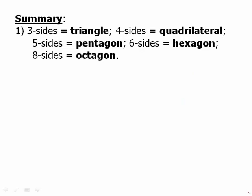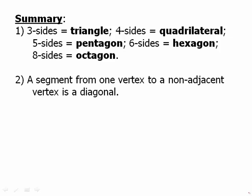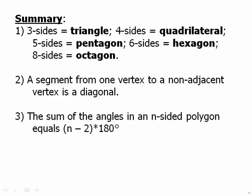In summary, a three-sided polygon is called a triangle. A four-sided polygon is called a quadrilateral. Five-sided polygon is called a pentagon. Six-sided one is called a hexagon. Eight-sided one is called an octagon. Those are words you need to know. A segment from one vertex to a non-adjacent vertex is a diagonal. And the sum of the angles in an n-sided polygon equals n minus two times 180.